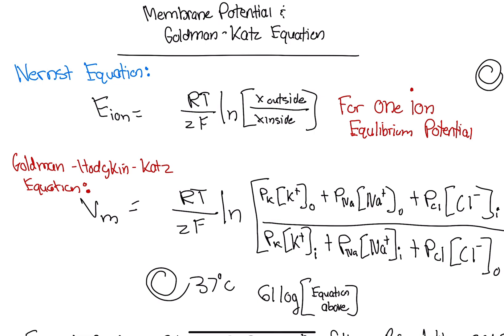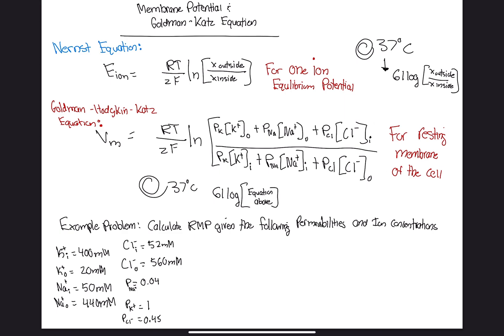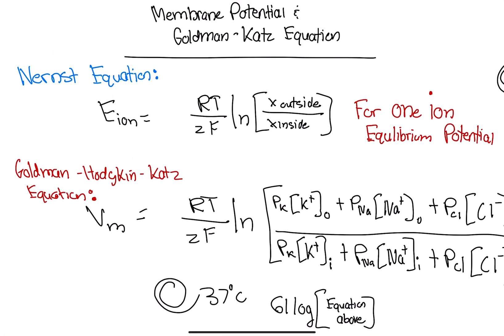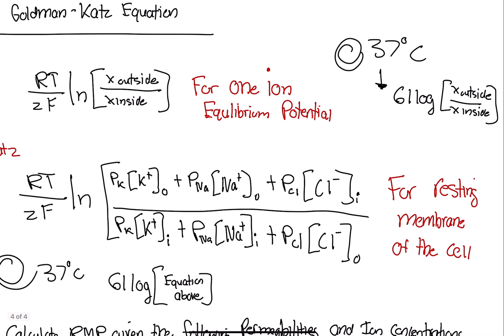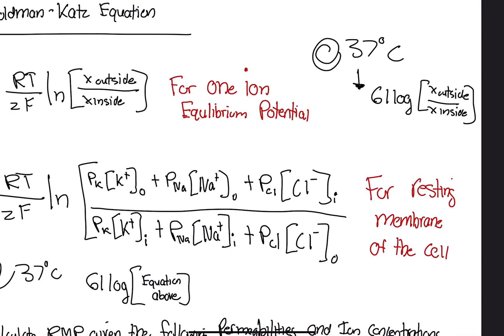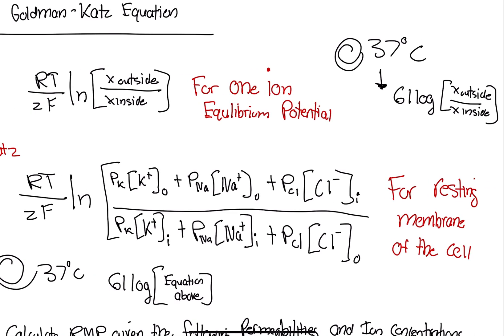That equation was R, which is the gas constant, times temperature in Kelvin divided by valence of the ion times Faraday's constant times the natural log of the ion concentration outside the cell divided by ion concentration inside the cell. I also told you that when the temperature is 37 degrees Celsius, which is human body temperature, we can eliminate all this RT over ZF natural log stuff and just change it to 61 log times the concentration outside divided by inside.